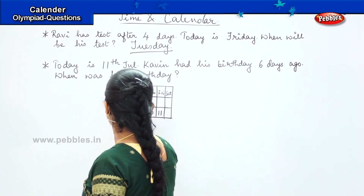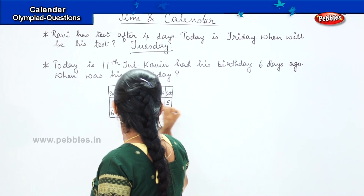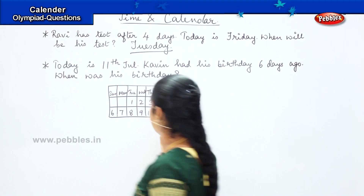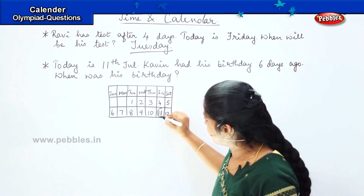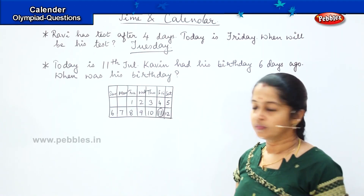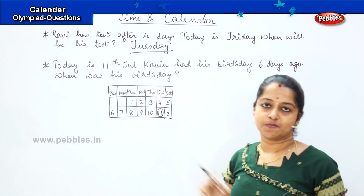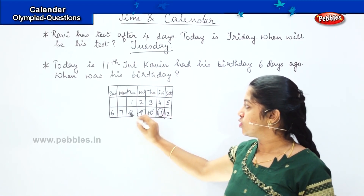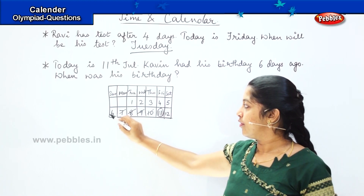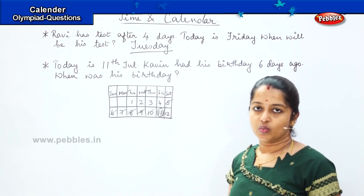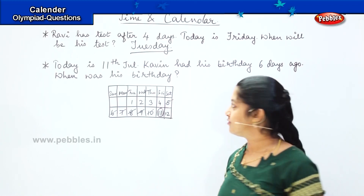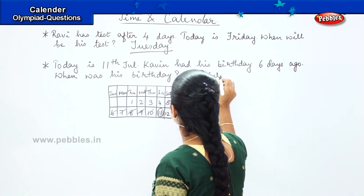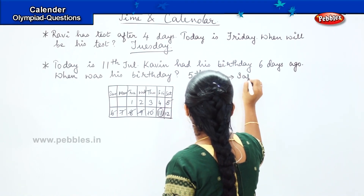Counting backward from 11th: 10, 9, 8, 7, 6, 5, 4, 3, 2 and 1. Today is 11th — I am circling here. Kavan had his birthday six days back, so counting 1, 2, 3, 4, 5 and 6. The sixth day was on 5th of July. So Kavan's birthday was on 5th July, which was on Saturday.